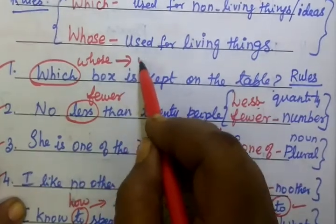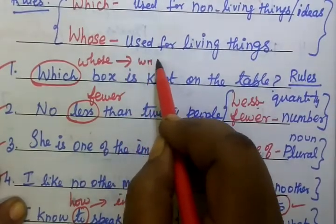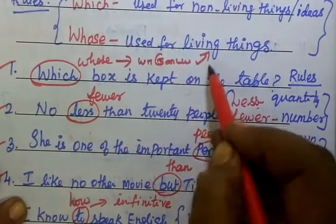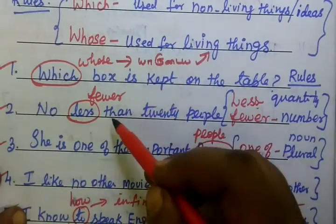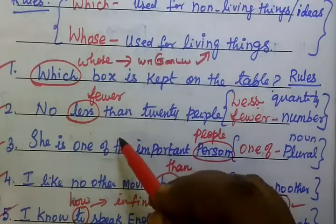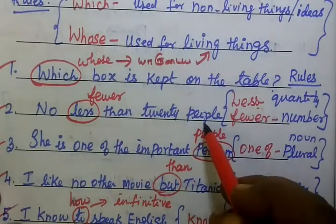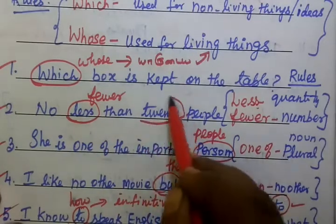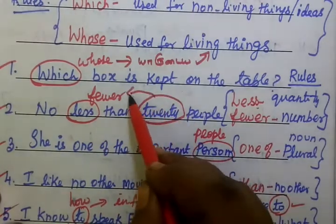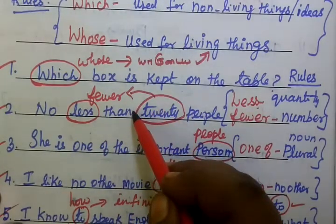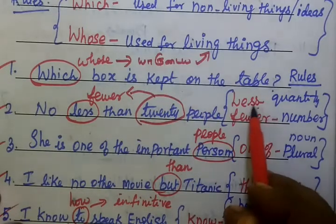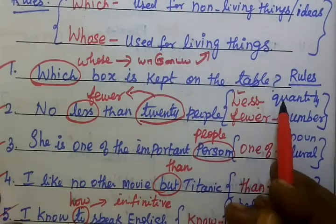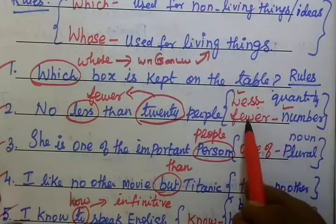Whose is used for living things. No less than twenty people — 'less' is incorrect here. Because twenty is a number, remember you have to use 'fewer' for numbers. Quantity means less; you are using 'less' for quantity and 'fewer' for number.